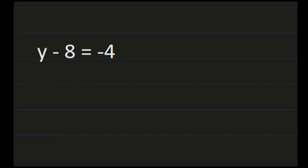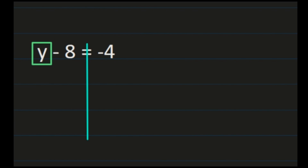For our second example, we have y minus 8 equals negative 4. We've changed the variable to y because you need to see problems with different variables. Box the variable since that's what we want to isolate. The line through the equals sign is helpful so you can see that whatever you do on the left-hand side, you do on the right-hand side. We have y minus 8, so the inverse operation is to add 8 to both sides.